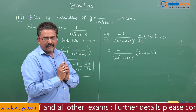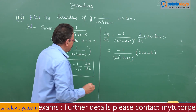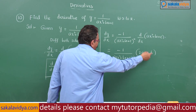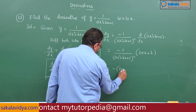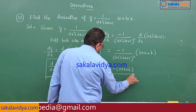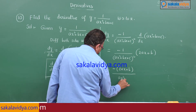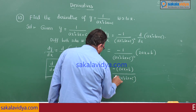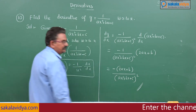Now it can be written in simplified form. This equals minus 1 times 2ax plus b, all divided by ax square plus bx plus c whole square. This is the answer.